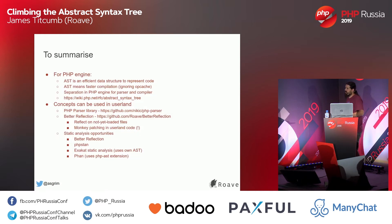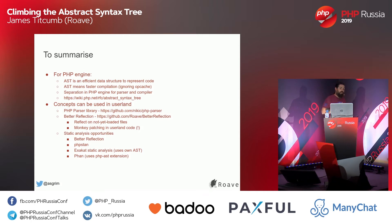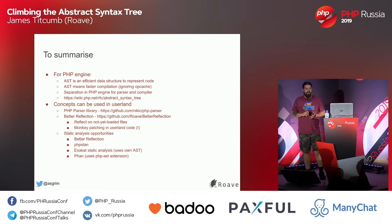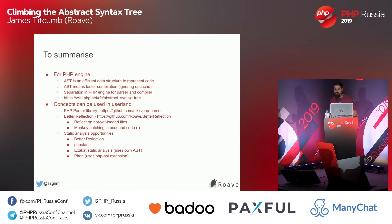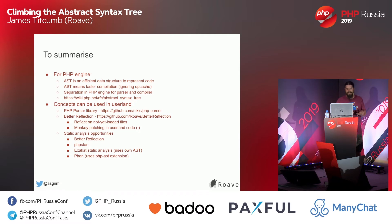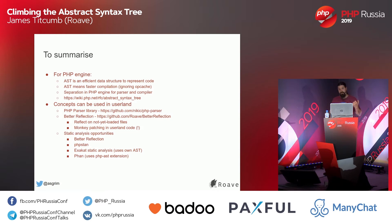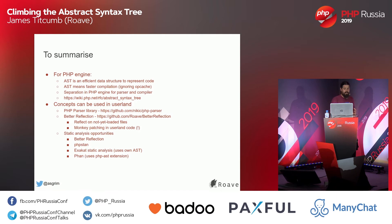To summarize: for the PHP engine itself, AST is an efficient data structure used to represent code. It means a faster compilation step, and opcache makes the runtime part faster. There's separation in the PHP engine between the parser and the compiler. Most importantly, we can use this in userland to analyze code better. PHP Parser exists as a fantastic library for parsing code, tools like Better Reflection can use that, and other tools like PHPStan, Exakat which uses its own AST, and Phan which uses the PHP extension, and so on.